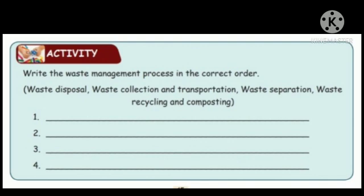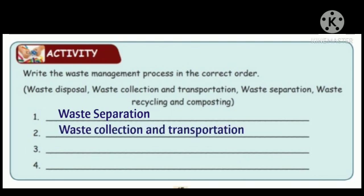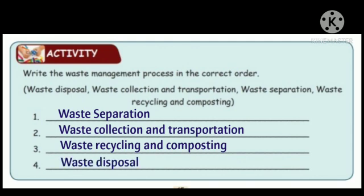What is the first step? Waste separation — we should separate the waste first. Second step: waste collection and transportation. Third step: waste recycling and composting. Last step: waste disposal. The answers in order are: waste separation, waste collection and transportation, waste recycling and composting, and waste disposal. Well done, students! Thank you, children. Bye.